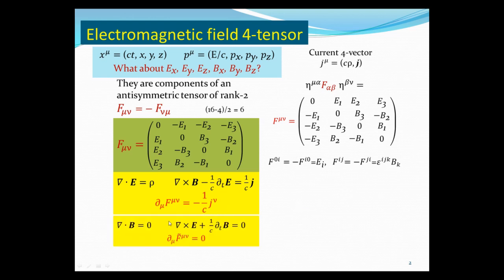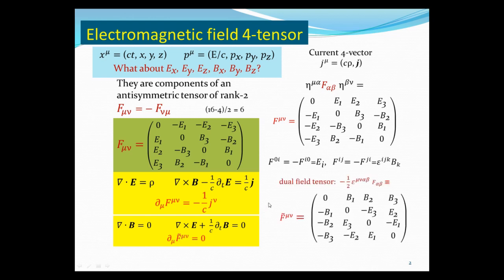For the homogeneous part of Maxwell's equations — no magnetic monopoles and Faraday's law — these can be written as the four-divergence of F̃, the dual field tensor. F̃ is defined by contracting F_μν with a four-dimensional Levi-Civita symbol, and when worked out, this simply swaps the electric field to the magnetic field and the magnetic field to minus the electric field.